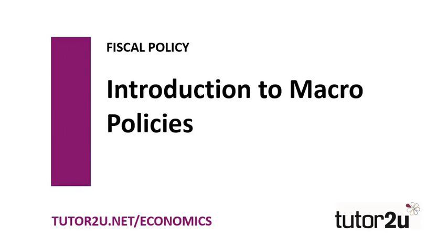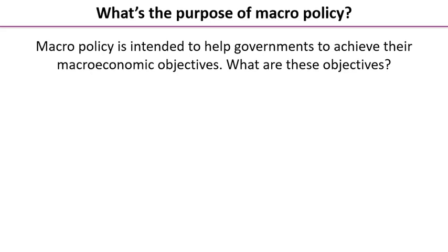In this first video on introductory fiscal policy, we're going to start by taking a quick overview of the various types of macroeconomic policy you'll need for A-level economics. Let's start by thinking about what the whole point of macro policy is and its general purpose. Generally, macroeconomic policy is designed to help governments achieve their macroeconomic objectives. Your first thinking task is to think about what those objectives might be.